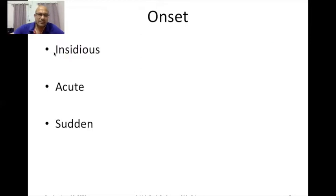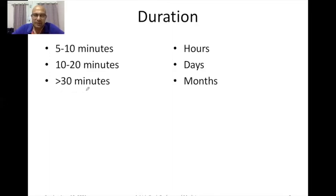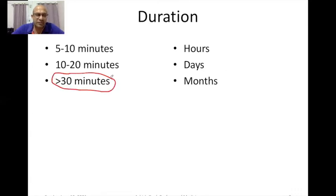Let's talk about the onset. The onset could be insidious — where the person doesn't even remember when it started — or it could be acute, or absolutely sudden, starting within minutes. Then the duration of chest pain: it could be as small as 5 to 10 minutes, 10 to 20 minutes, or more than 30 minutes. The figure of 30 minutes is important because by definition, myocardial infarction is a pain lasting more than 30 minutes. You also need to know whether the pain has been there for hours, days, or months.